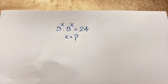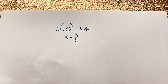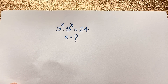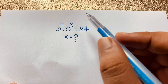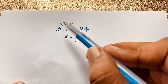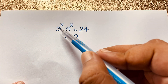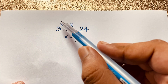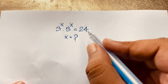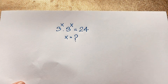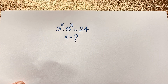Hello everyone, welcome to Russia's classroom. Today we have solved an interesting German math Olympiad question. This exponential math problem: 3 to the power x times 3 to the power x is equal to 24. x is equal to what? How to solve this interesting math problem?